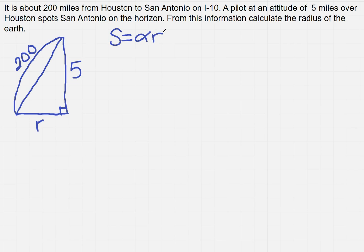So I could solve that for alpha. Well, I know the arc length is 200. So I've got 200 equals alpha times R. So I'm going to have 200 over R equals alpha.